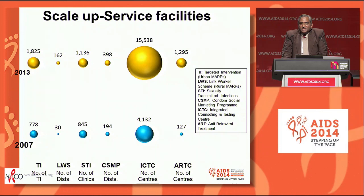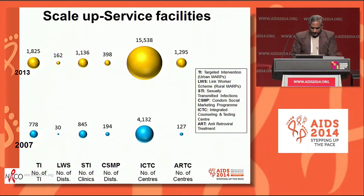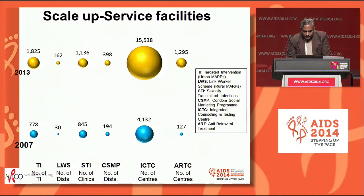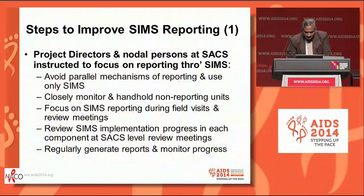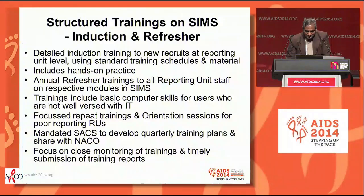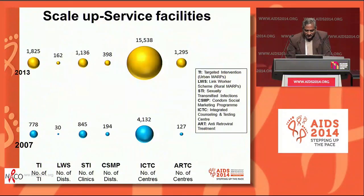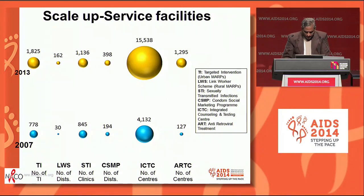The scale of the task is daunting. Over the period of the National AIDS Control Program Phase 3 from 2007, you can see the scale-up of the facilities. The targeted interventions increased from 778 to 1,800. In terms of counseling and testing centers, from 4,000 in 2007, the number has increased almost fourfold to 15,000. So the only way we can get timely reporting from this large number of facilities is through a strategic information management system.